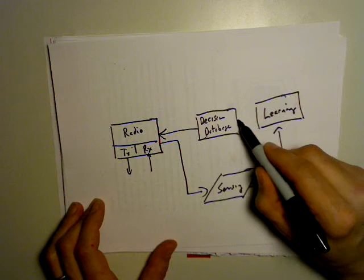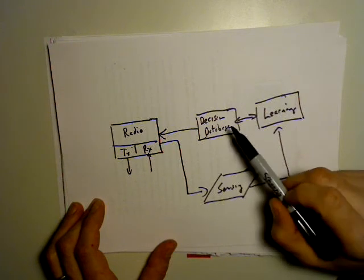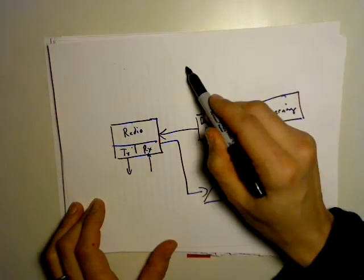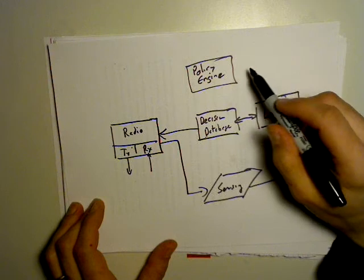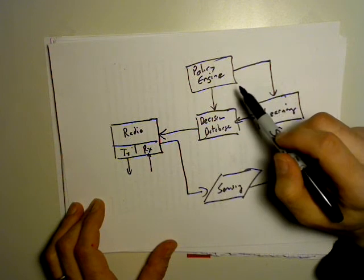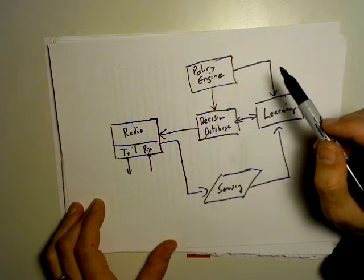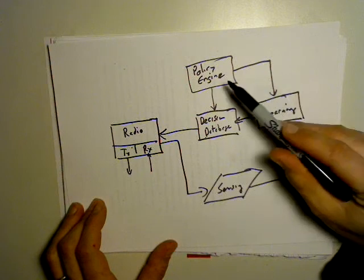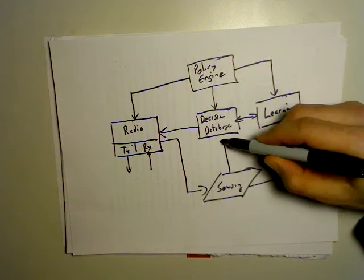The sensing information goes into a learning process and reasoning. The learning process has some interchange with the decision database — it keeps it up to date and provides new decisions and new approaches for specific scenarios. When learning, you might also refer to past decisions. On top of that, there's an overarching policy engine. The policy engine dictates what we can and cannot do in the spectrum — it tells the decision database what's eligible and what's not. For example, if you cross the border into another country, different operating conditions exist, and you'll have to readapt. The sensing information also feeds into the decision database.